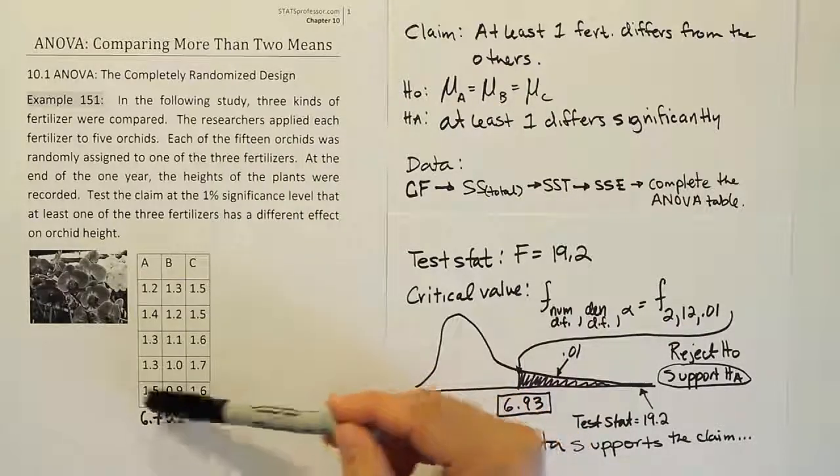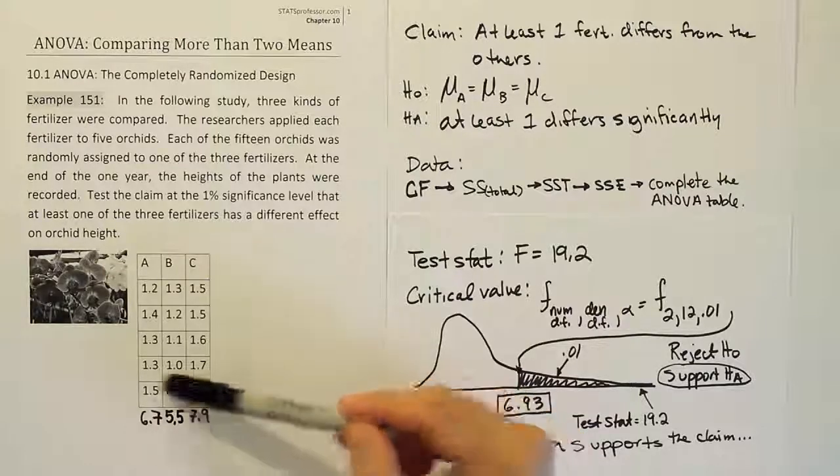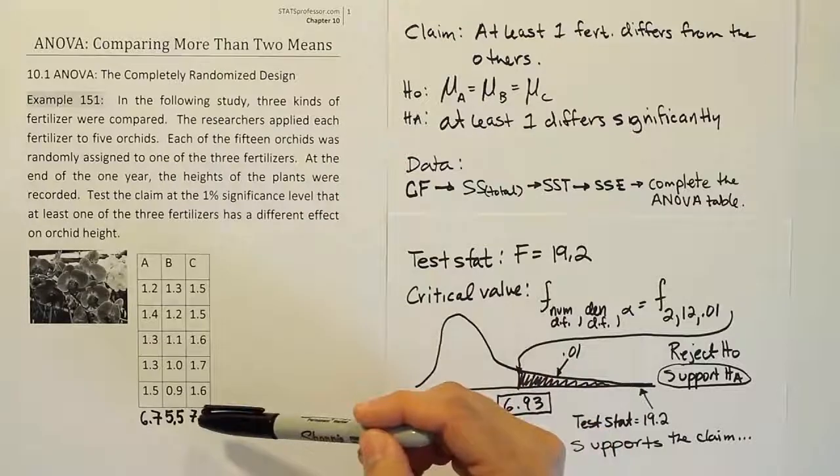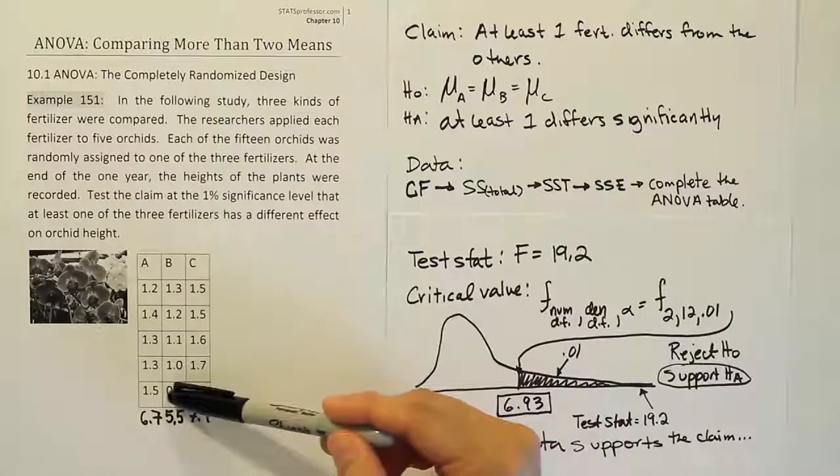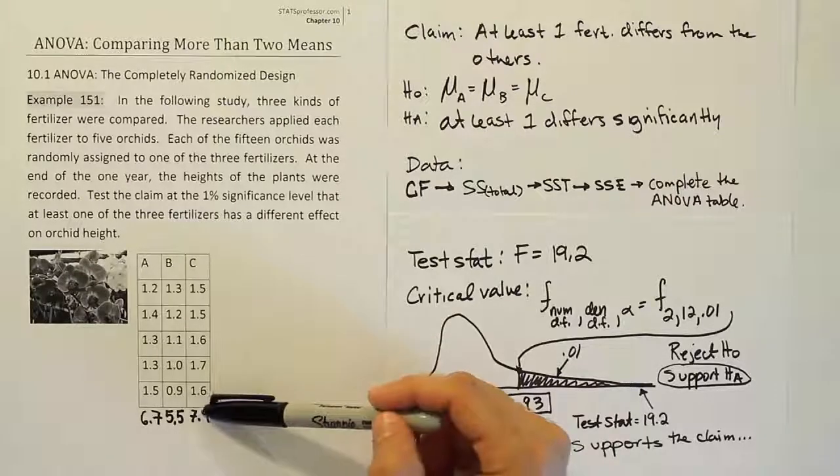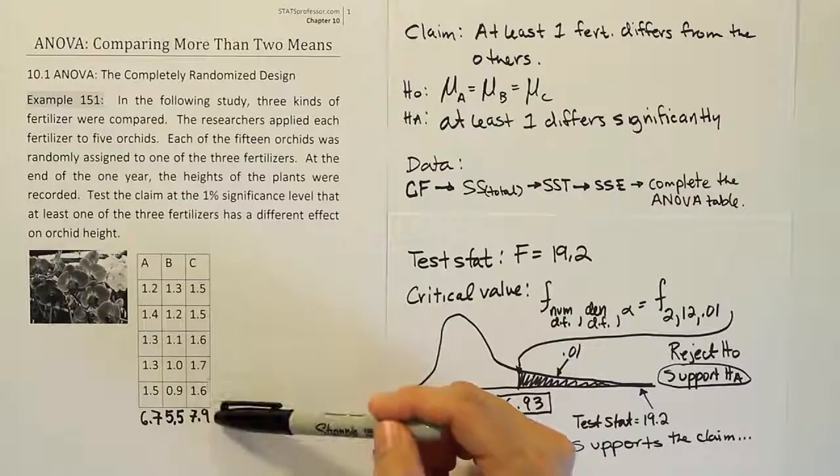Or maybe C and A are a virtual tie, but B is smaller than both C and A. You know, those are the different types of scenarios that I can't answer from this problem. All I can say for sure is that there must be a difference between the largest and the smallest. Because if you couldn't show there's a difference between the largest and the smallest, then you can't show there's a difference between any of them, right? So at least I know that B and C work differently and C seems to work better.